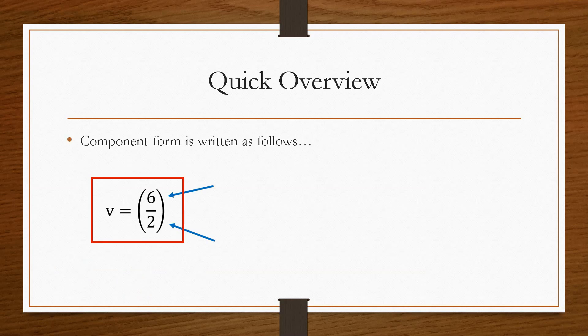Now if we look at this in component form, then it can be written as we said, like this. So the number at the top refers to the distance in the x-axis, and the number on the bottom is the distance in the y-axis. So this would be the vector v, and this would be in component form. So that means that this would go six along and two up.